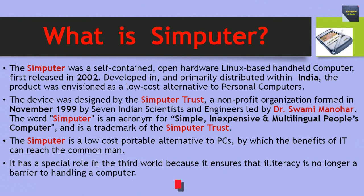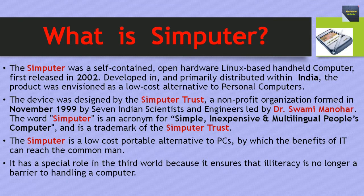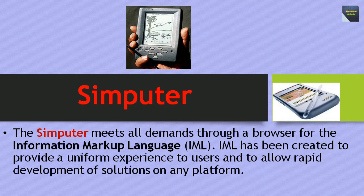The Simputer is a low-cost portable alternative to PCs by which the benefits of IT can reach the common man. It has a special role in the third world because it ensures that illiteracy is no longer a barrier to handling a computer. The Simputer meets all demands through a browser for the Information Markup Language, known as IML, which was created to provide a uniform experience to users and to allow rapid development of solutions on any platform.